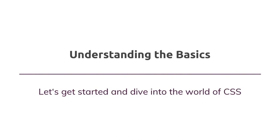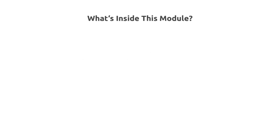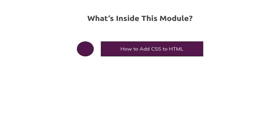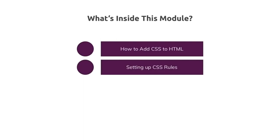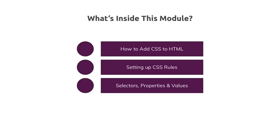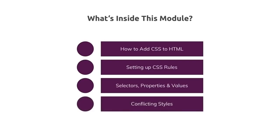Welcome to this module. Let's dive right into the basics of CSS. In this module, you'll learn how to add CSS to HTML to ensure your page looks good, and which different options you have. We'll then cover how to set up CSS rules, dive into selectors, properties, and values, and finally look at how to resolve conflicting styles.